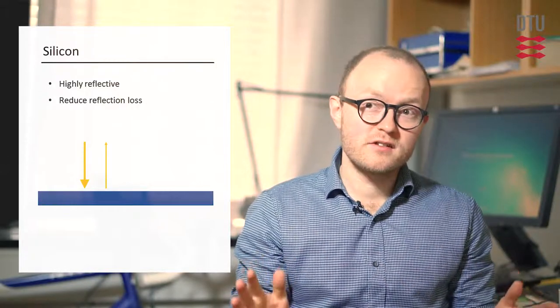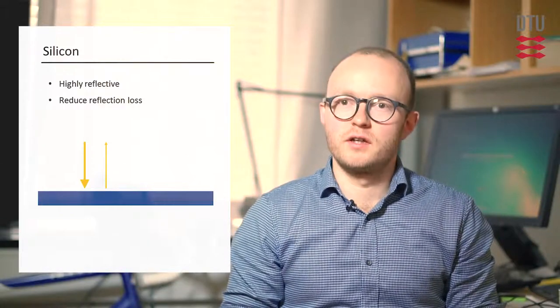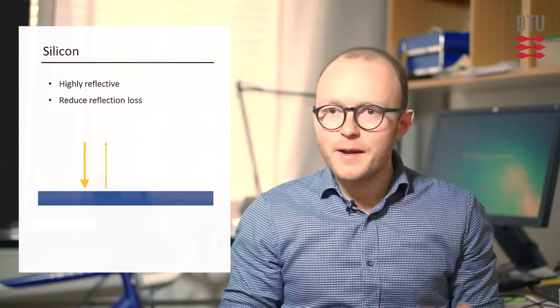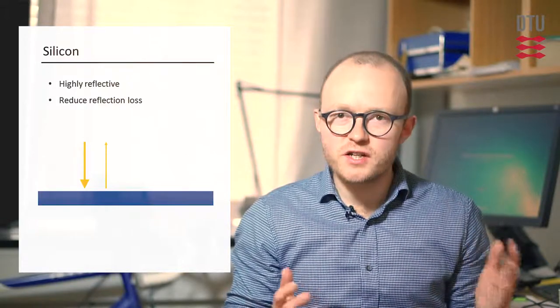So we want to minimize reflectance across the spectrum of wavelengths that's relevant. What's being done today for silicon cells is, first of all, a surface texture.